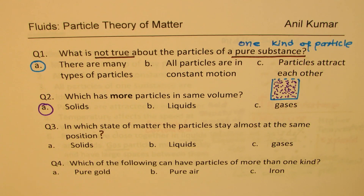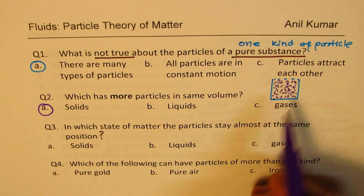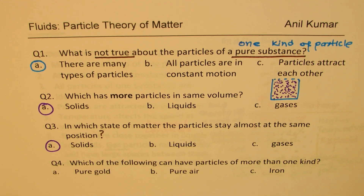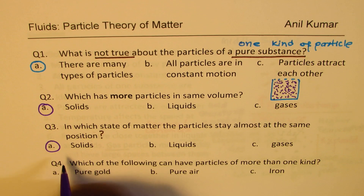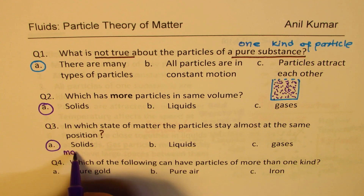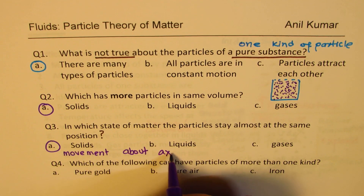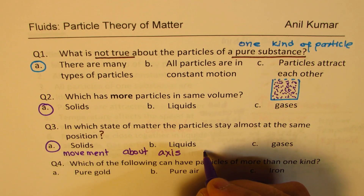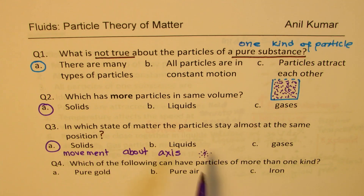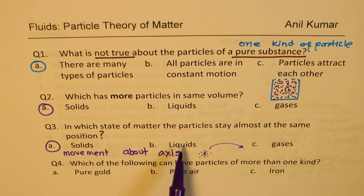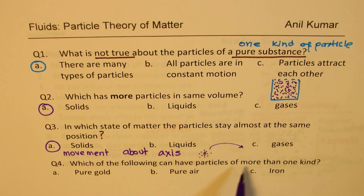Question three: In which state of matter do particles stay almost at the same position? That is solids — they are very compact and not very free to move around. About their axis only they move. In solids, it is only movement about an axis — just slightly away from a point, not moving from here to there. That is why solids are very compact. In liquids and gases, particles move around all over the place. In liquids they slide and flow; in gases, movement is in any direction.